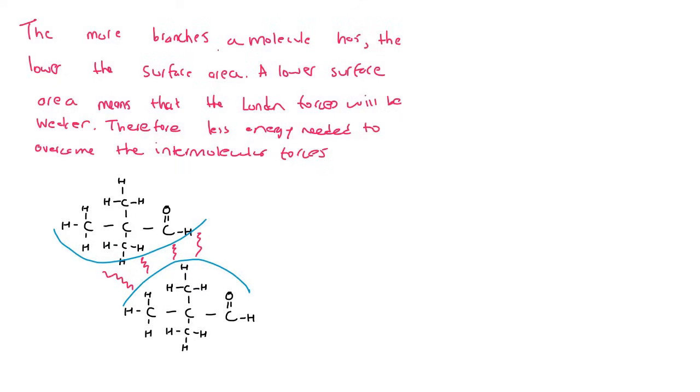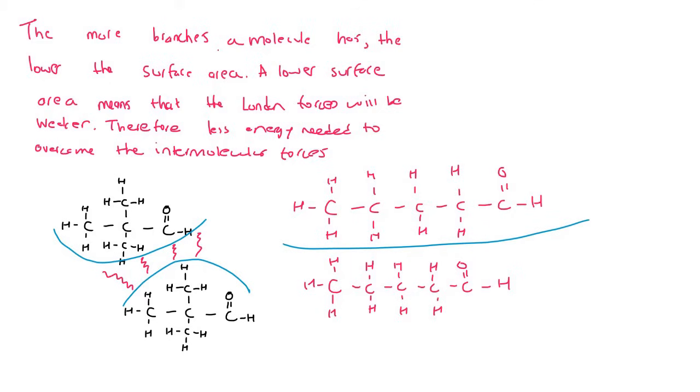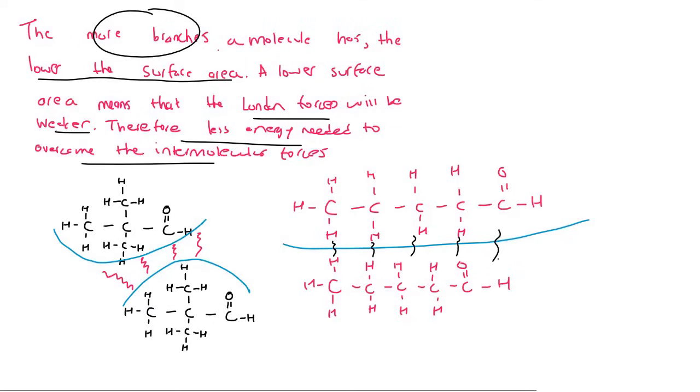Now if I take the molecules of R, can you see that I'll be able to put those two molecules much closer together? Because what we can see is that this surface area that is available is a lot larger for these intermolecular forces such as the London forces to work. Can you see there's a larger surface area? So when you have more branches, then you have a lower surface area. And a lower surface area means that the London forces will be weaker, because there's less of them. Therefore less energy is needed to overcome the intermolecular forces.